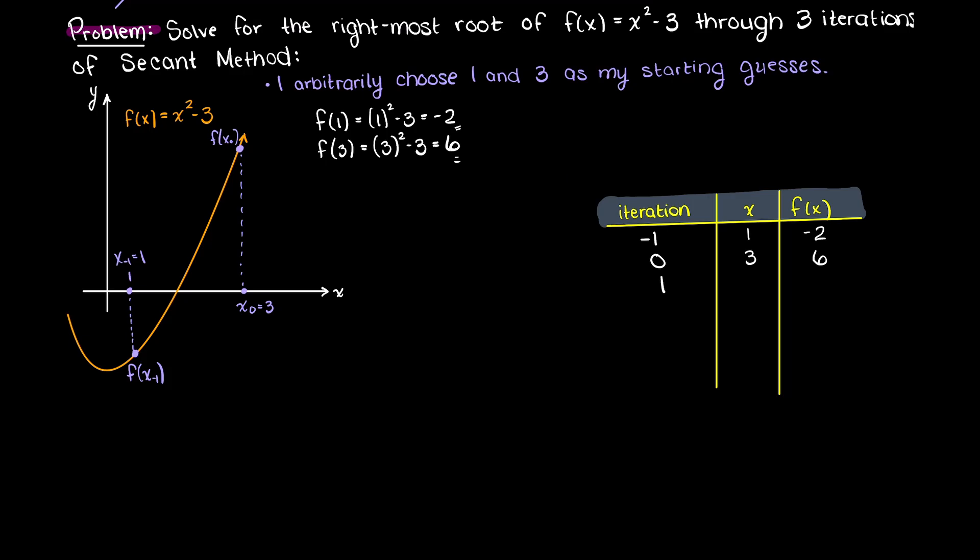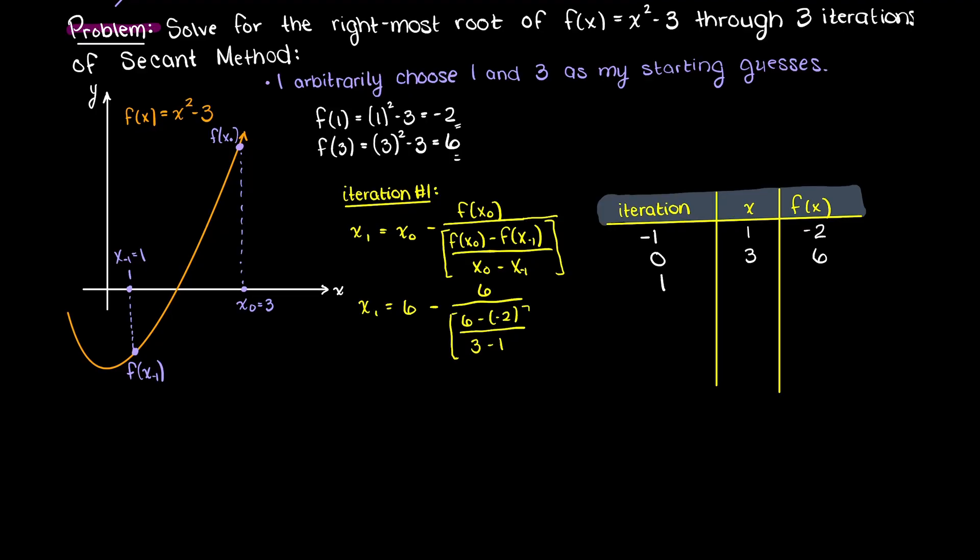Now, we are ready to solve for the first iteration using the secant method. Using our general secant method formula, we can adjust the x values to fit our first iteration. Now that we have the formula written like this, we can simply fill in the variables as we already have the values from earlier. After doing this, we are left with an x value of 1.5. Let's add that to our table and evaluate the function at this x value. And that is really how simple the secant method can be.